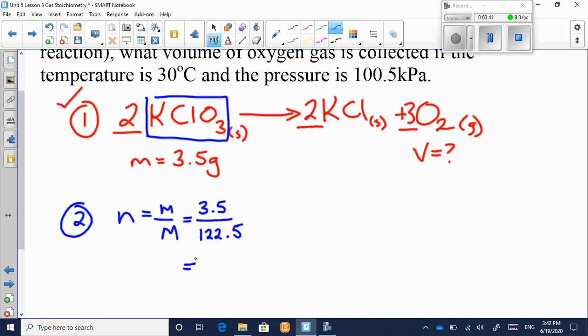Which converts to, when we divide that, we get 0.0286 moles. Step number two of stoichiometry is done. We've converted to moles.